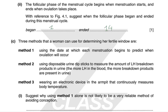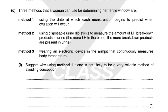Three methods can determine the fertile window: Method 1 uses the date of menstruation onset to predict ovulation; Method 2 uses disposable urine dip sticks to measure LH breakdown products; Method 3 uses an electronic device in the armpit that continuously measures body temperature. Using Method 1 alone is not reliable because many women's cycles are irregular, and can be further affected by travel, stress, or illness.